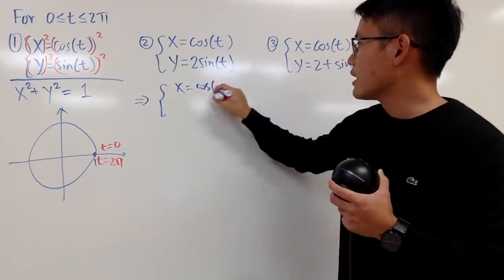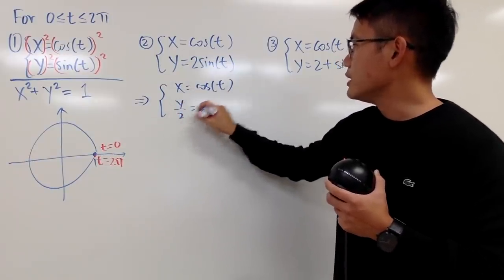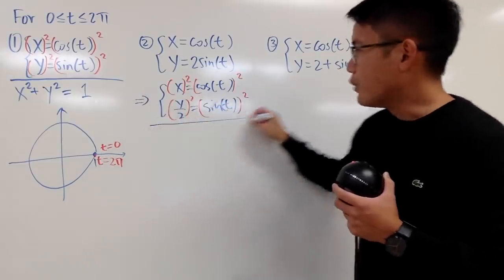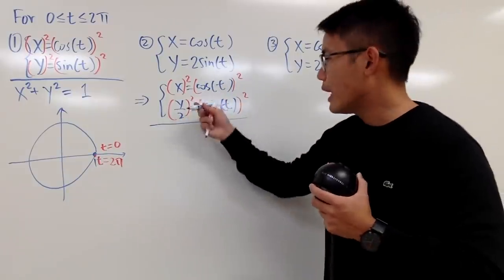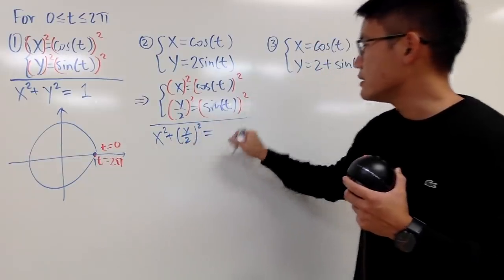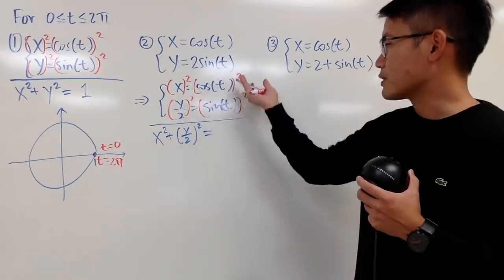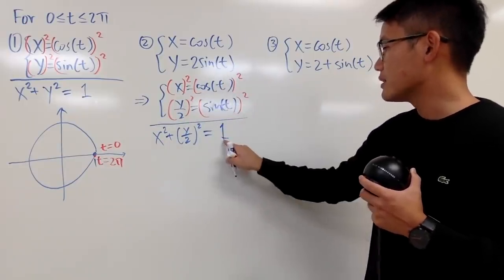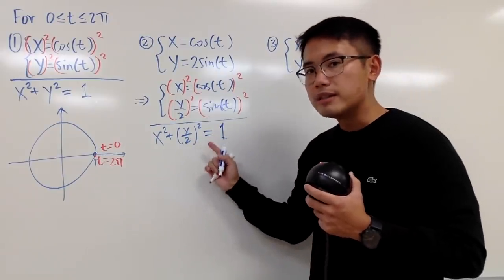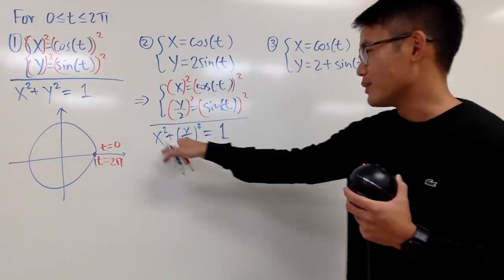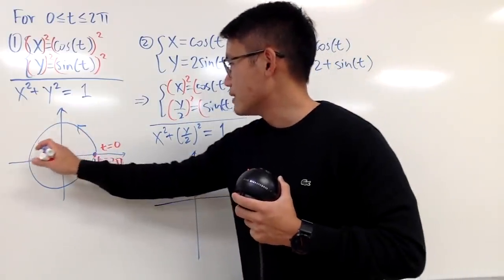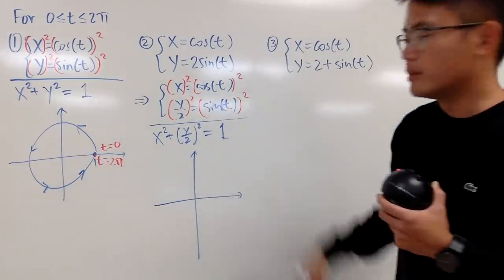So x = cos(t) and y/2 = sin(t). Squaring and adding both equations gives x² + (y/2)² = cos²(t) + sin²(t) = 1. This is the equation of an ellipse. The y-intercepts are at 2 and -2. When drawing parametric equations, you should include arrows to show direction.